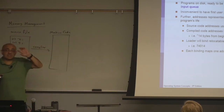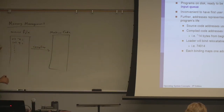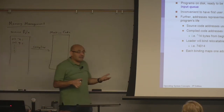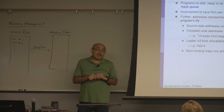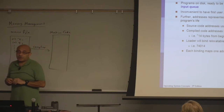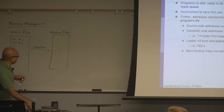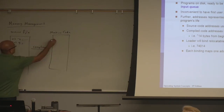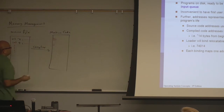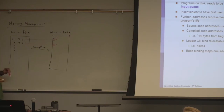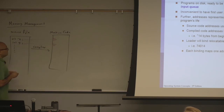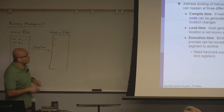Each variable will be in some storage location — either stored in memory, in which case it has a memory address, or it's in a register. So the compiler translates variable names into addresses. If the compiler translates these variable names into absolute addresses — the actual addresses that will be used — this is what we call compile-time binding, which is something that modern systems do not do.